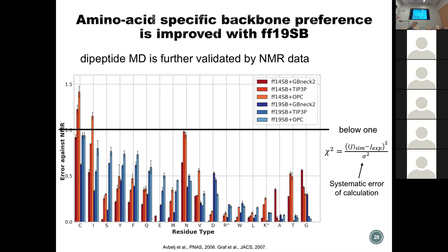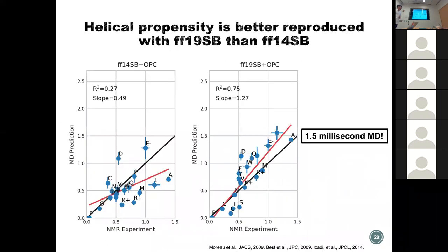With 19SB's systematic training, we pass the J-coupling test. For instance, if we use the alanine CMAP and apply it to valine, the error bars can be really large — the transferability is not good. That's why we use valine-specific parameters for valine. A more sensitive test is the helical propensity. Comparing to the earlier 14SB-OPC correlation of R²=0.27, when we update from 14SB to 19SB the R² improves to 0.75. And FF19SB was not trained against this data — we only trained against quantum mechanics and combined with OPC, which is also a quantum-derived model.